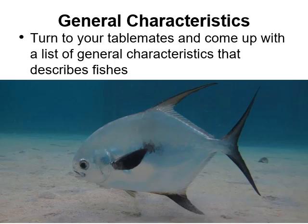The first thing I want you to do is think about some characteristics that would describe fishes. You can't turn to your table mate unless you happen to be watching this video with a buddy. Even if you're not, pause it and think for a second about some characteristics that might describe fishes. You can see in this picture a permit, which is obviously a type of fish. Think about the things that this fish has that makes it a fish.